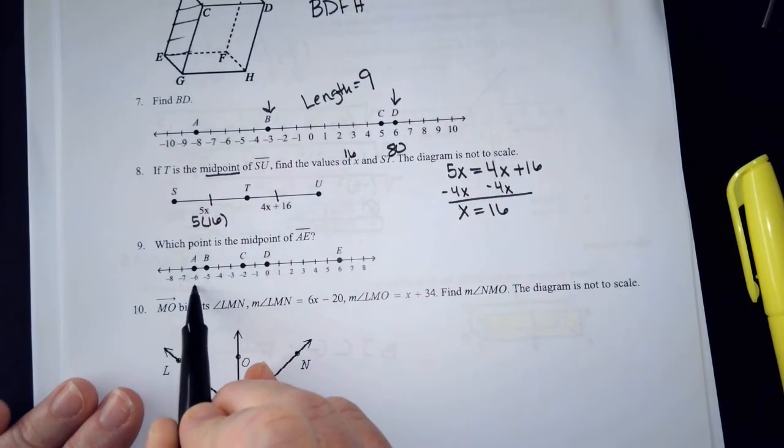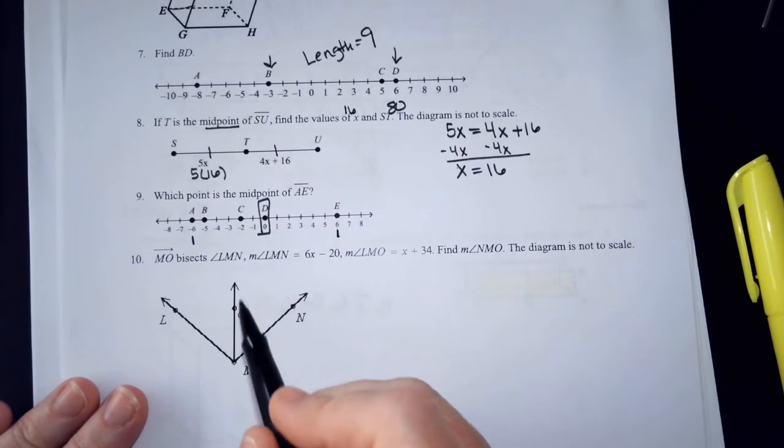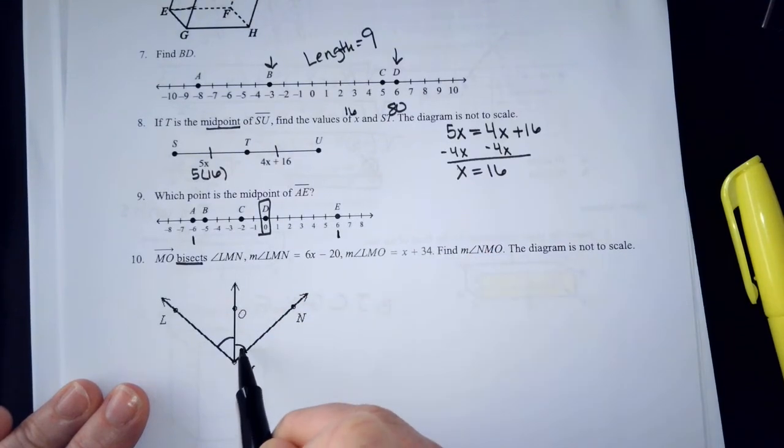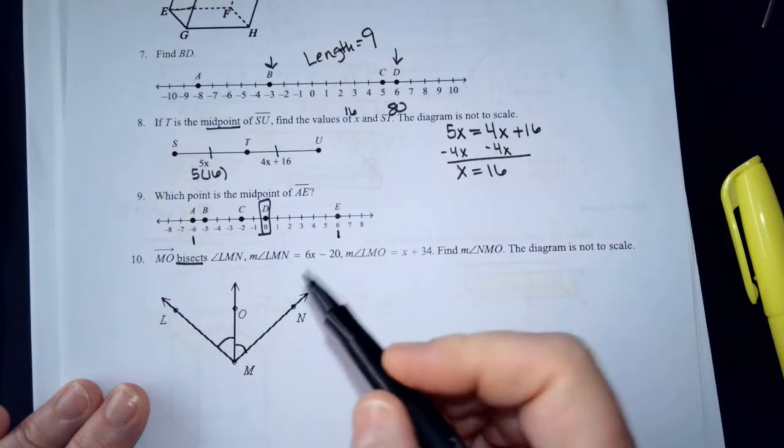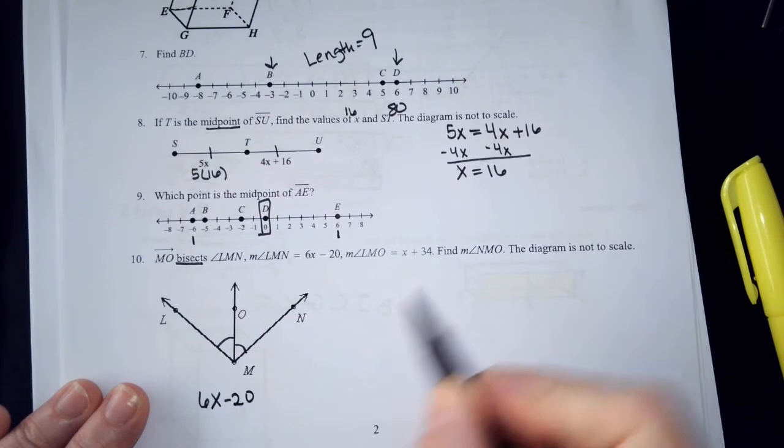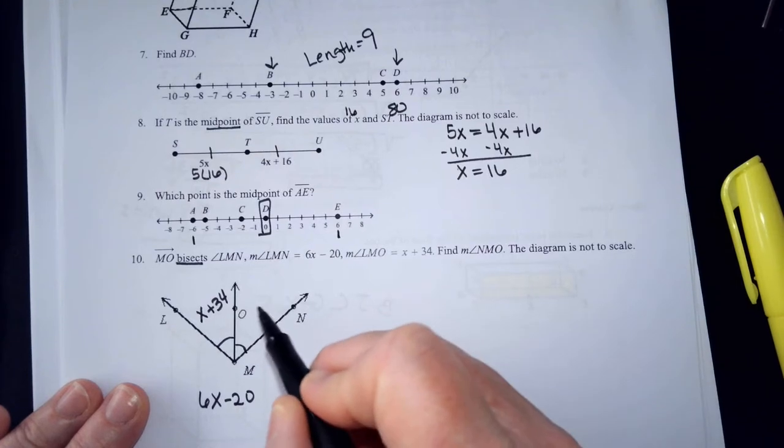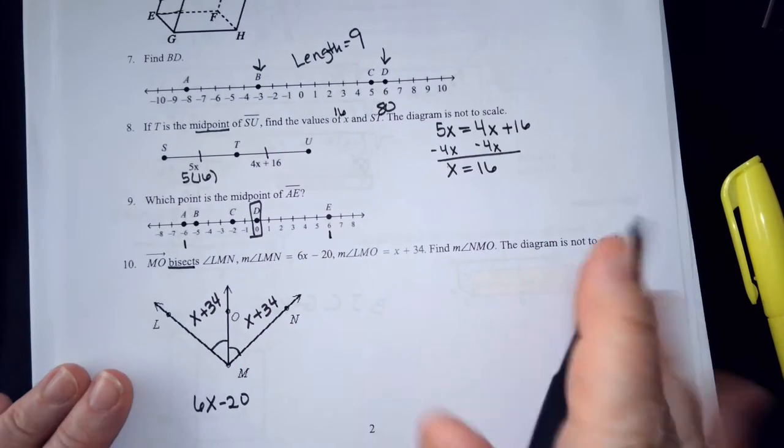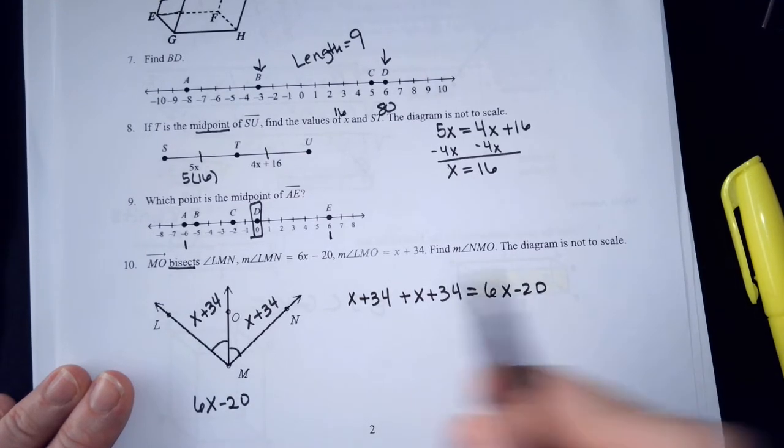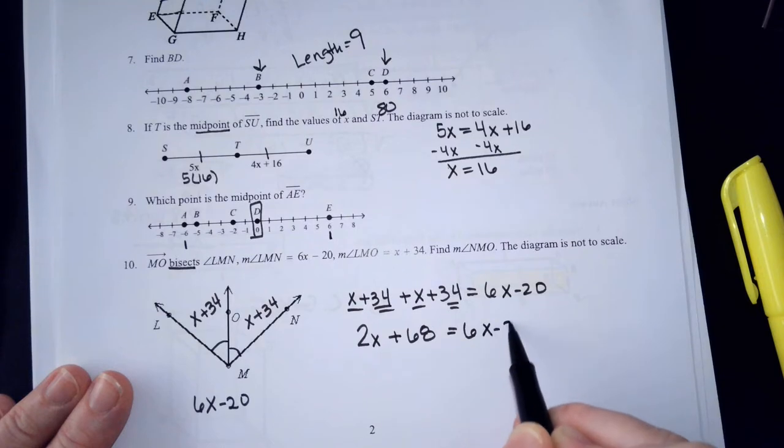Which point is the midpoint of A, E? D. Zero is the midpoint. M, O, bisects. The word bisect is a strong word. It means that it cuts it into two congruent parts. You see how I put one stripe in this angle and one stripe in that angle? That's what that indicates. L, M, N, the big angle is 6X minus 20. L, M, O, the small angle is X plus 34. If it's congruent to this angle, what's this angle's measure? X plus 34. So, here's my equation. If you add X plus 34 to X plus 34, you're going to get 6X minus 20. So, that gives me 2X plus 68 equals 6X minus 20.